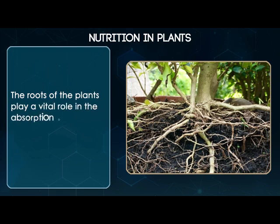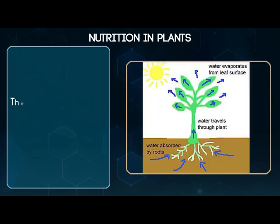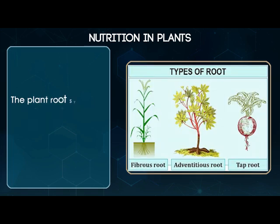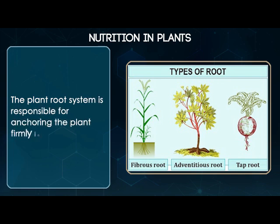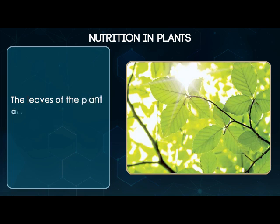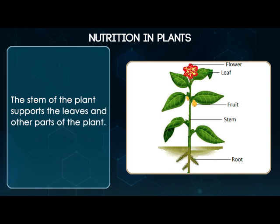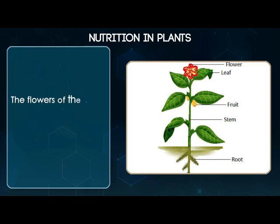The roots of the plants play a vital role in the absorption of water and minerals from the soil, and are also responsible for anchoring the plant firmly in the soil. The leaves are responsible for photosynthesis, the stem supports the leaves and other parts of the plant, and the flowers are responsible for reproduction.